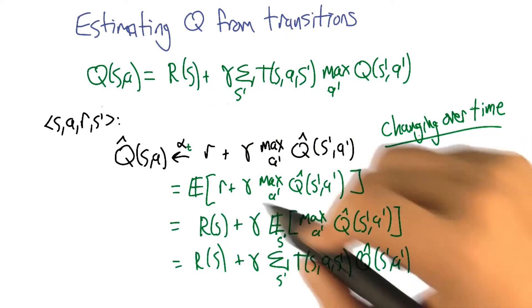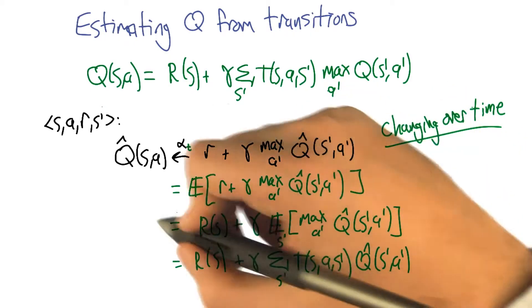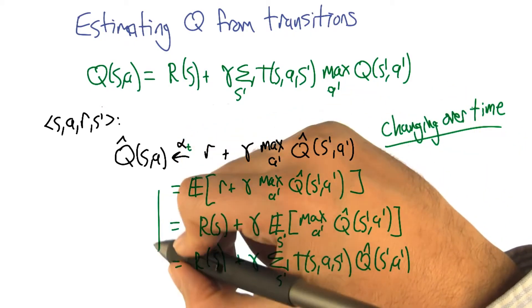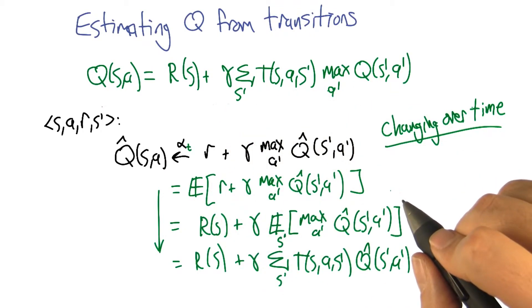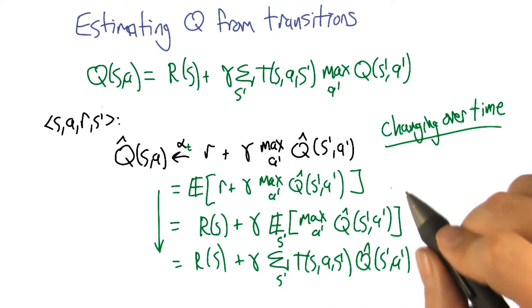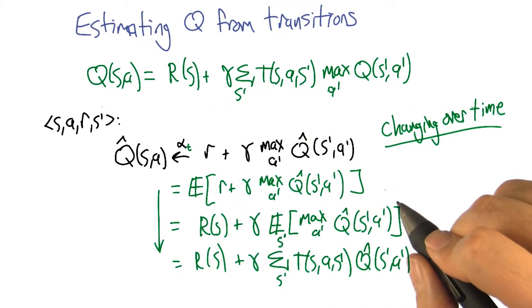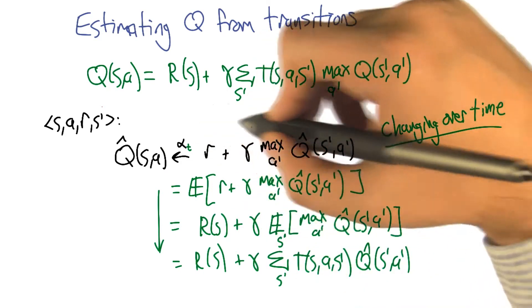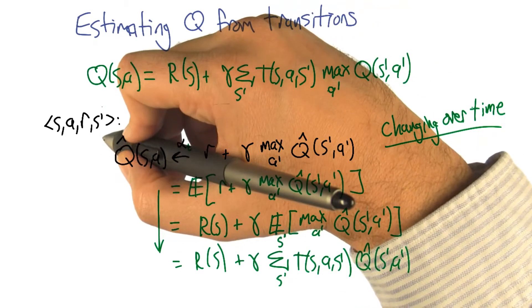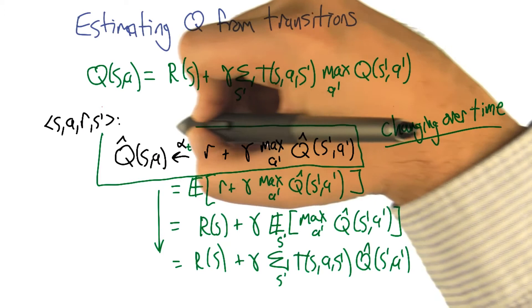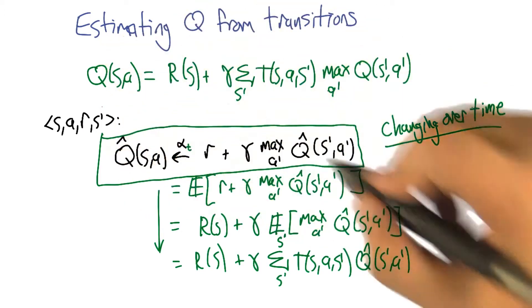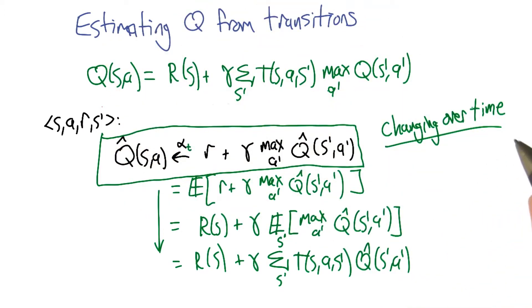It's changing over time, so we can't quite do this analysis because the first step is a little bit questionable. But it turns out that there really is a theorem that this simple update rule — this Q-learning update rule, this tiny little one line of code — actually solves Markov decision processes.